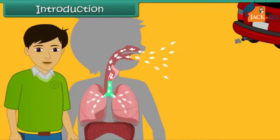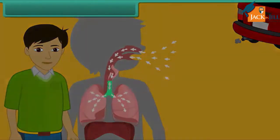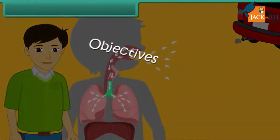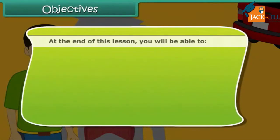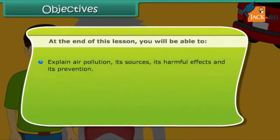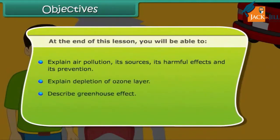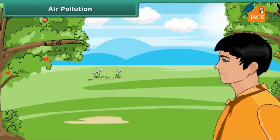At the end of this lesson, you will be able to explain air pollution, its sources, its harmful effects, and its prevention. You will also be able to explain depletion of the ozone layer, describe the greenhouse effect, and explain the formation of acid rain.